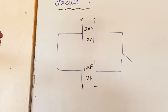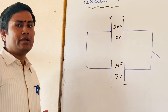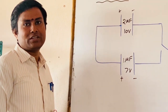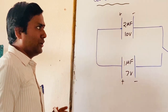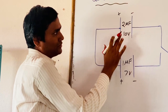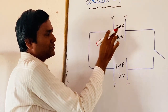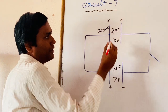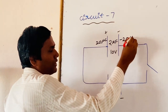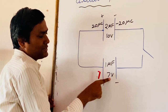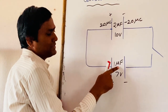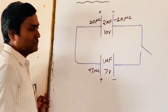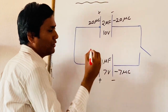In order to calculate the common potential, first I will use the loop rule, and later we can verify whether the principle of conservation of charge is applicable or not. So what is the total charge before closing the switch? CV = 2 × 10 = 20 microcoulombs here, minus 20 microcoulombs on the other plate. This capacitor is charged to 7 volt with 1 microfarad, so it will have plus 7 microcoulombs and minus 7 microcoulombs.